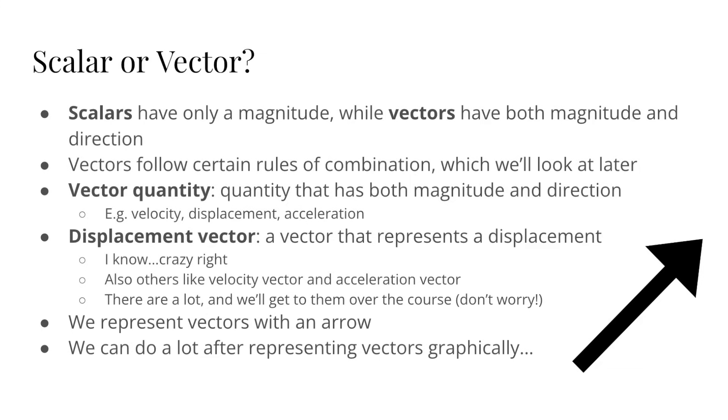And vectors on the other hand have both a magnitude and direction, and they obey rules of vector algebra. They follow certain vector rules of combination which we'll look at later in another lesson. So vector quantities are quantities that have both a magnitude and direction and thus can be represented by a vector. And some of the common ones are velocity, displacement, and acceleration. Displacement is probably the simplest vector quantity, and we'll call a vector that represents a displacement a displacement vector. And similarly we refer to others like velocity vectors and acceleration vectors. And here, like many others, we'll represent vectors with an arrow with its head at the arrow in the direction it's pointing, and the length of this arrow representing the magnitude of the vector.